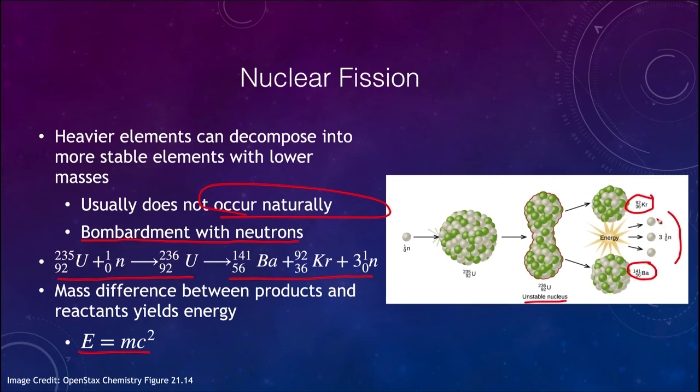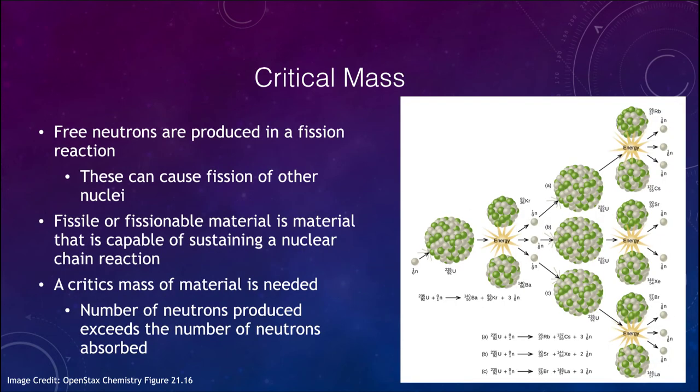So that is where the energy is coming from. Note these neutrons because they are important because they can keep the cycle going by going back and bombarding another nucleus of uranium-235 and continuing the chain reaction. In order to do this, you do need a critical amount of material. And that's what we call the critical mass. Those free neutrons that are produced can continue to cause fission of other nuclei. So we can start with one that splits out, but that one forms three neutrons, which can then strike three more uranium-235 nuclei and cause them to split forming again more neutrons. So this is what we mean by fissile or fissionable material. It is material that is capable of sustaining a nuclear chain reaction.